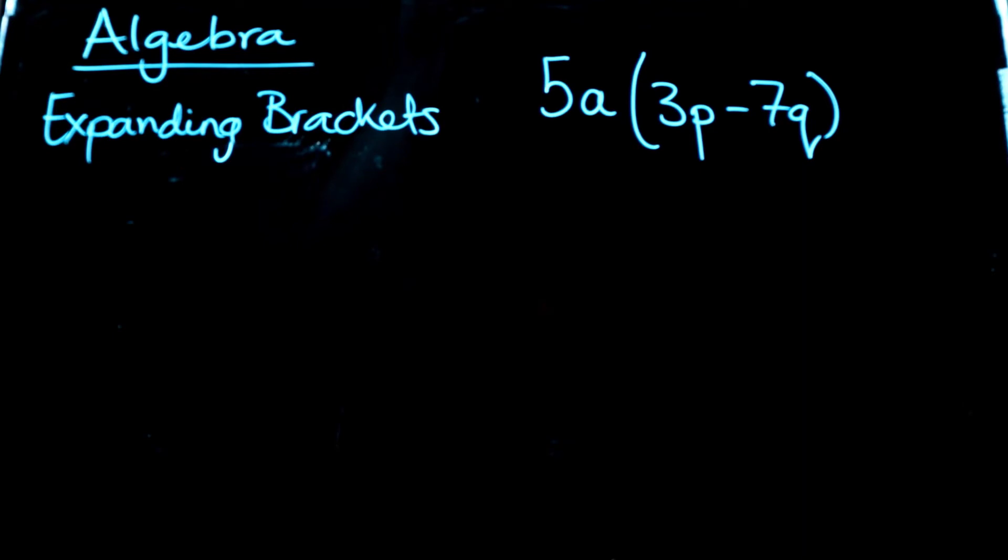We've got 5a outside a set of brackets and inside the brackets we've got 3p minus 7q. Now 5a is our common factor to both these things. And that's why it's sitting out the front here. Our job is to expand the bracket. So we need our training wheels to help us manage this process until we get good at it. So they're the kinds of things I'm writing. I'm drawing two arrows because it's helping me remember what to do.